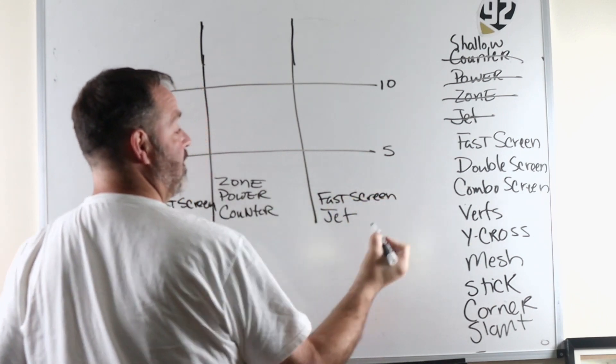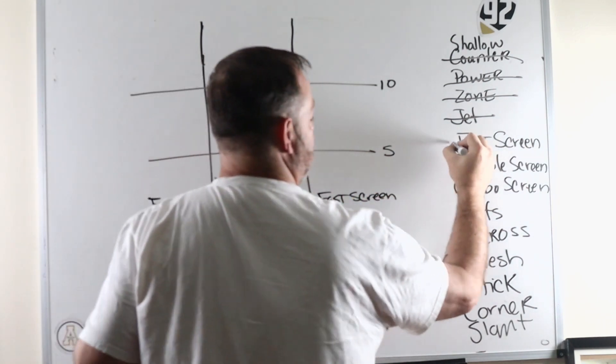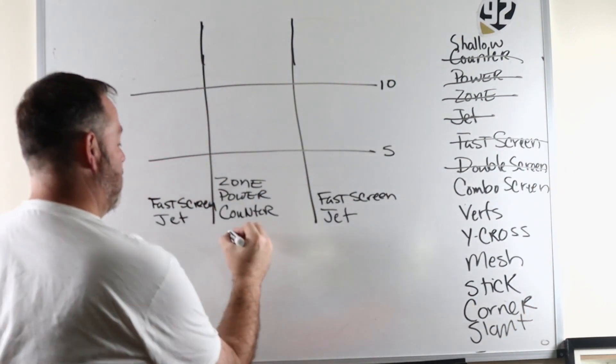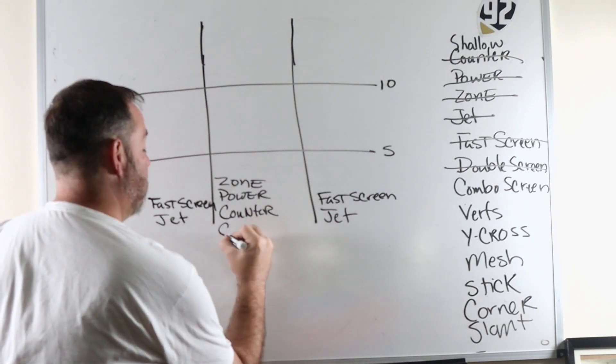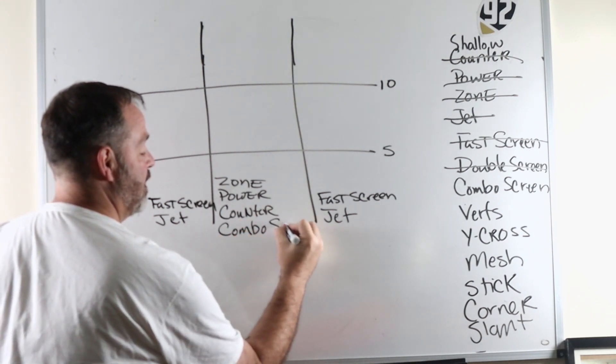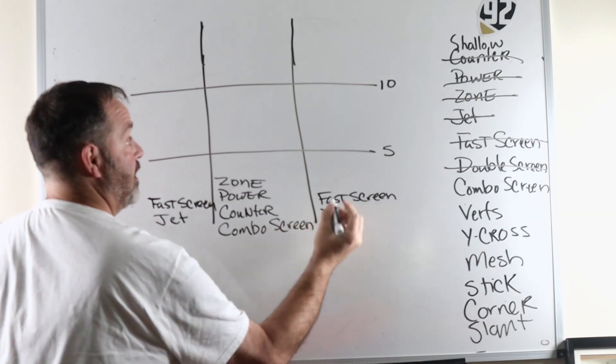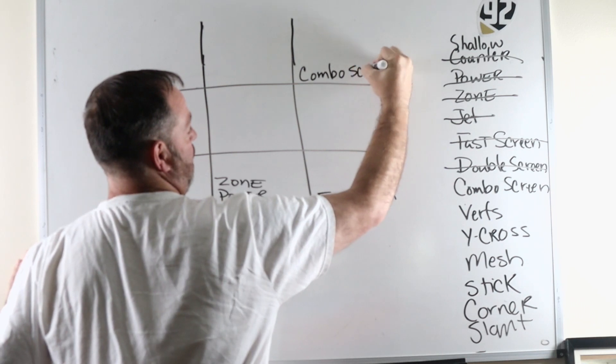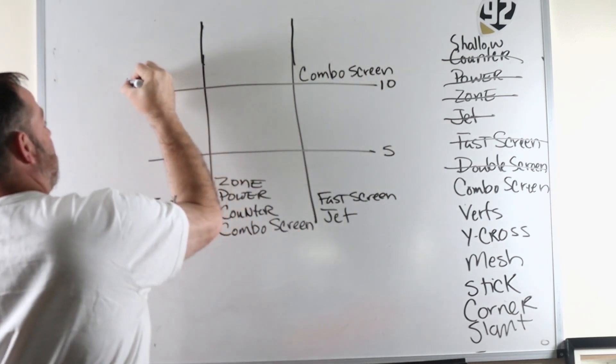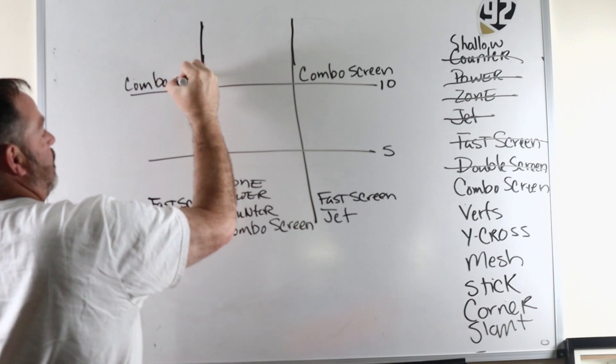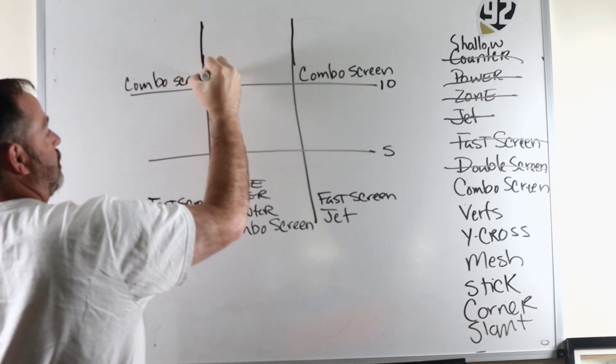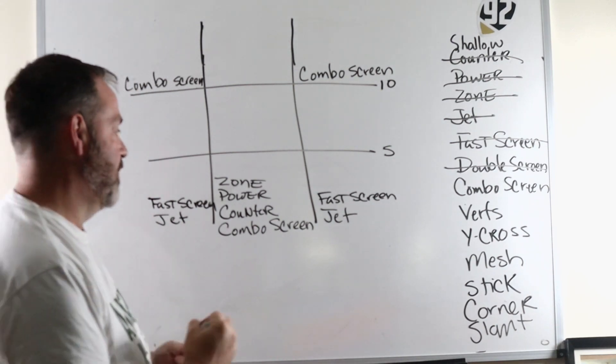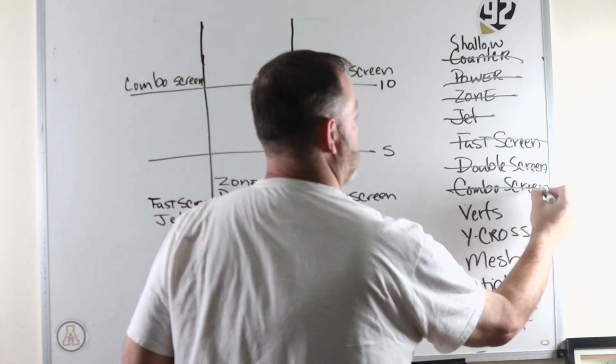Now, we do have a pedal screen in the offense, but we don't call it. It's just part of an RPO type thing. And then our combo screen, which we'll probably do another video on at some point, hits either here or here. And that's a slot fade slow screen type thing. All right, so that's that.